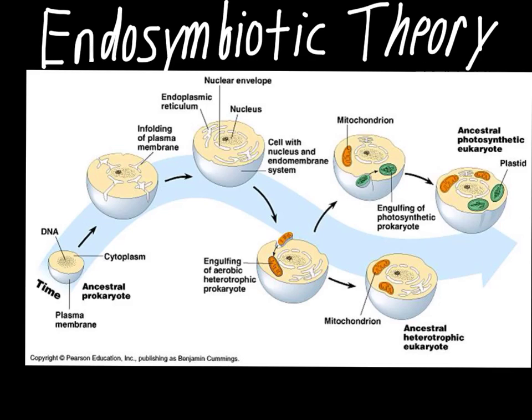It's a cell that was brought into a larger cell through the process of phagocytosis — bringing in something it's going to eat, since phagocytosis is usually the process of bringing in a food molecule. The way the theory goes, this mitochondria could not be broken down by lysosomes inside the cell. Instead, it begins to live symbiotically — endosymbiosis. The larger cell protects the smaller cell, and in return, this smaller cell provides ATP, an energy source, for the larger cell.